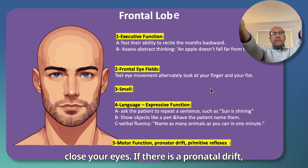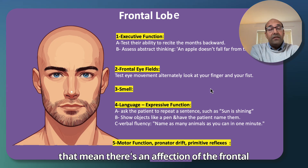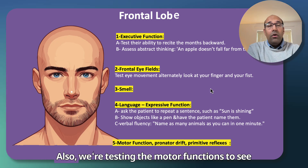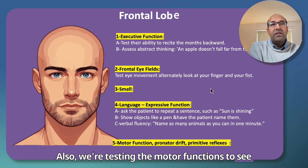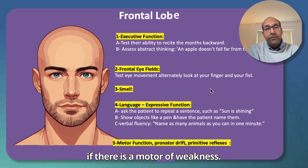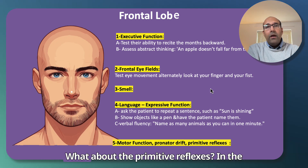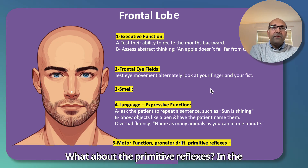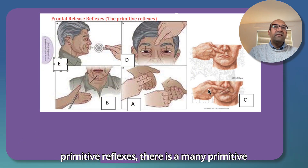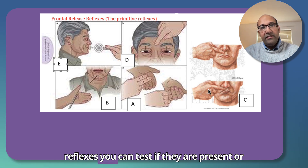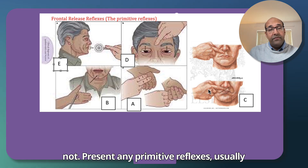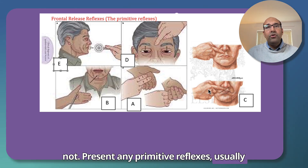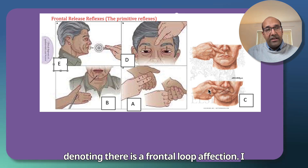Ask the patient to close their eyes. If there is a pronator drift, that indicates affection of the frontal loop. We also test motor functions to see if there is any motor weakness. Moving on to primitive reflexes — there are many you can test, and the presence of any primitive reflex usually denotes frontal lobe involvement.